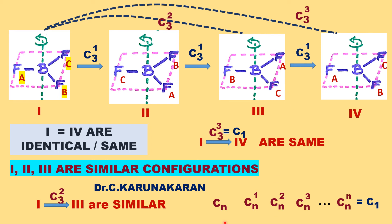For C4 similarly: C4¹, C4², C4³, C4⁴ — C4⁴ equals C1. Therefore there are three C4 axis operations: C4¹, C4², C4³; C4⁴ is nothing but C1, therefore it is not counted. For Cn generally: Cn¹, Cn², Cn³ ... Cn^n, the last one cancels as it equals C1 rotation.